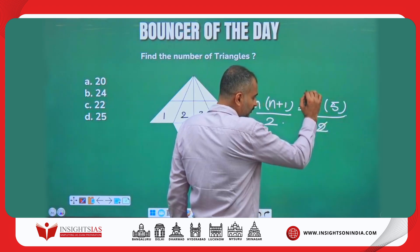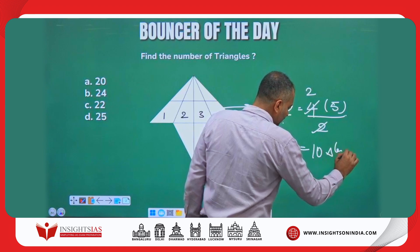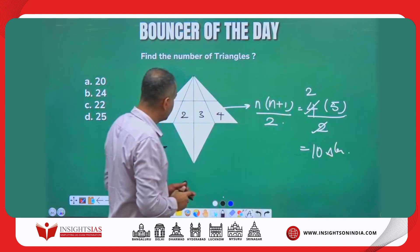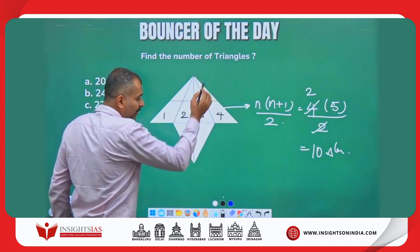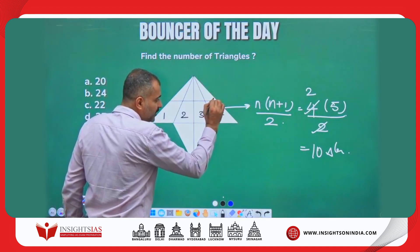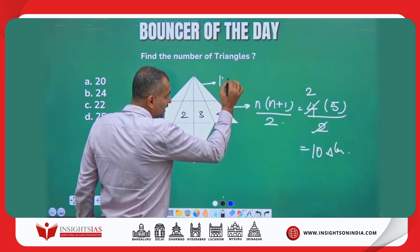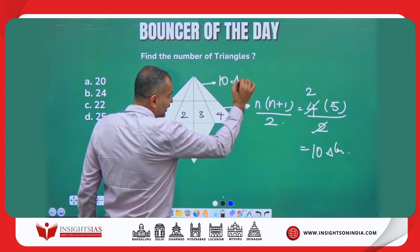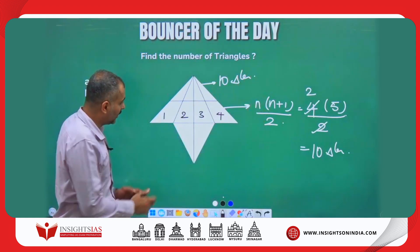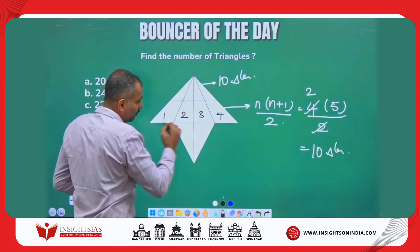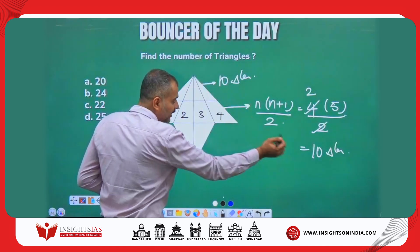This gives 10 triangles. So here 10 triangles are there. But when I make a partition here, similarly here also, you will get the same 10 triangles. This bigger triangle consists of 10 triangles here.